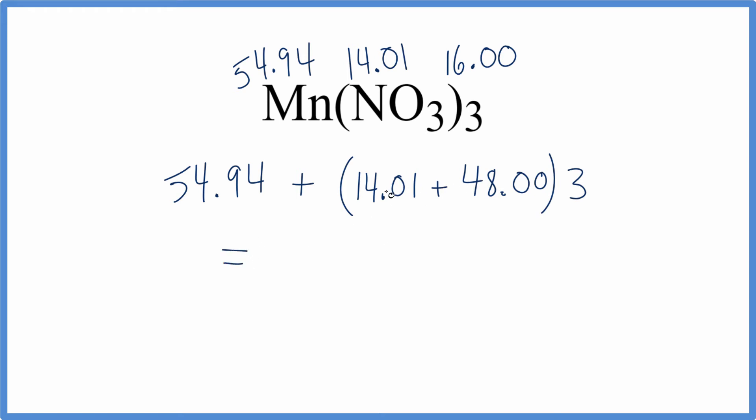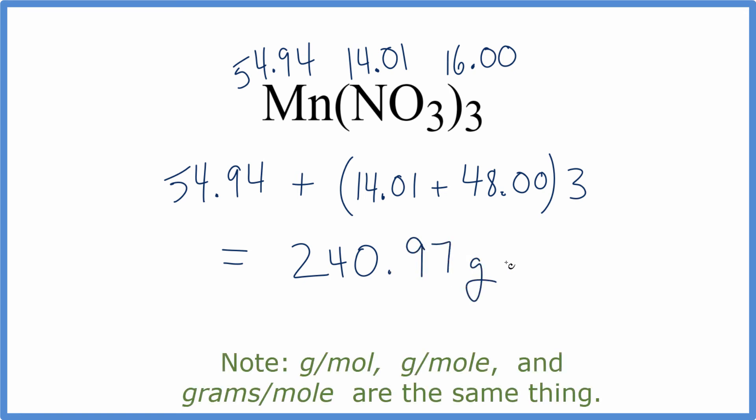We'll take 14.01 plus 48.00, add those together and multiply them by three, and then we add it to our 54.94. And we end up with a final molar mass of 240.97 grams per mole.